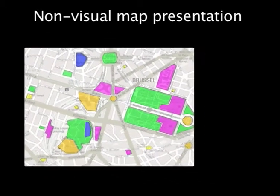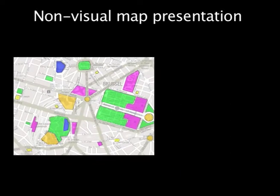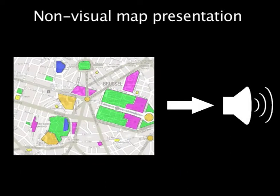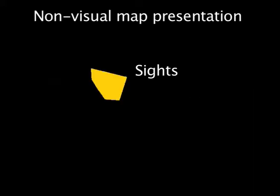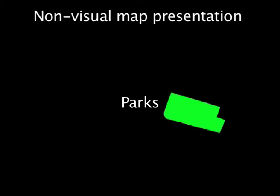We developed a non-visual presentation which enables the user to explore digital city maps using an auditory display. In this display, each geographic feature is represented by a corresponding natural sound. This can be sights, parks, and lakes.